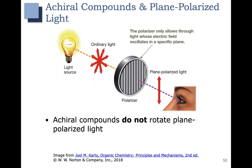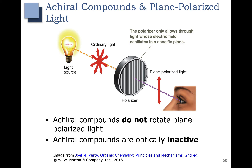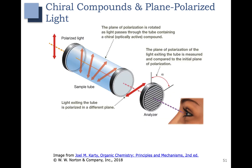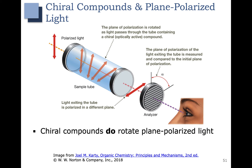If you have a sample tube containing an achiral compound, the plane polarized light will go through it and come out the same way. Thus, we say that achiral compounds are optically inactive. However, if you have a chiral compound, it will rotate plane polarized light. That light went through a polarizer to line up in one direction. Here's our sample tube — in that sample tube you put your compound, and if your compound is chiral, it will cause the light to rotate just a little bit. So chiral compounds do rotate plane polarized light, and chiral compounds are optically active.